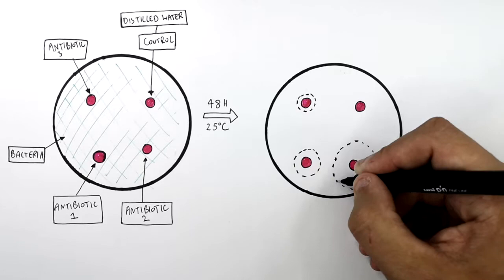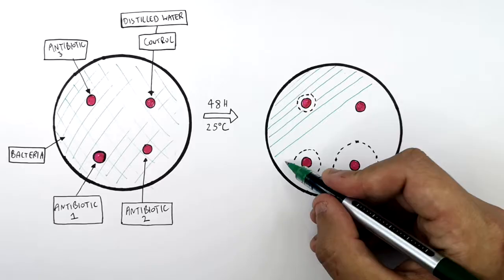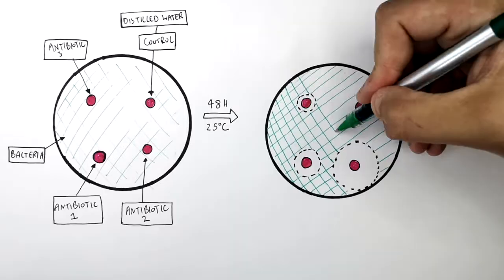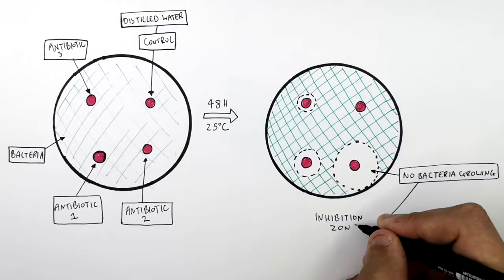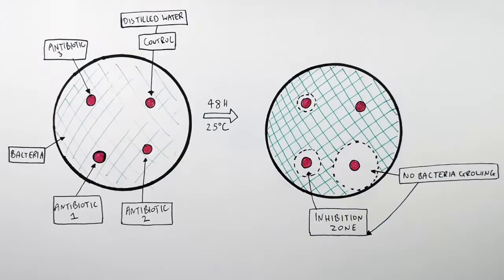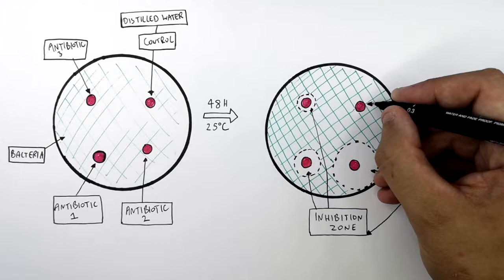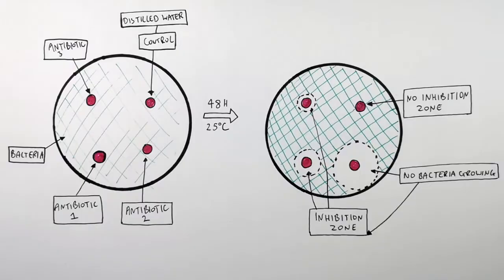The green area is where the bacteria populations have grown, so bacteria are present where there is green colour on the agar plate. In the zone of inhibition there is no bacteria growing. This inhibition zone can also be seen surrounding antibiotic 1 and antibiotic 3. Around the control disc there is no zone of inhibition.